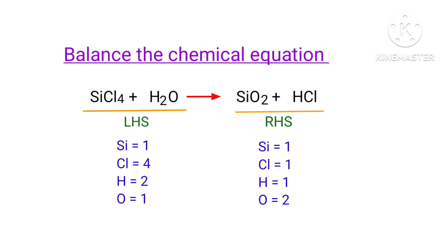In this equation, we need to balance the chlorine atoms first. To do this, we need to put a coefficient of 4 in front of HCl. The chlorine atoms are balanced.